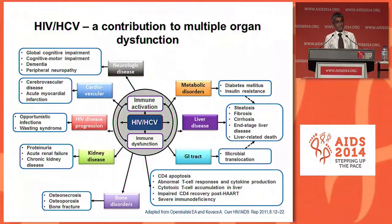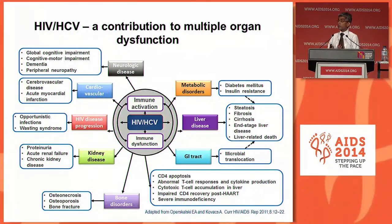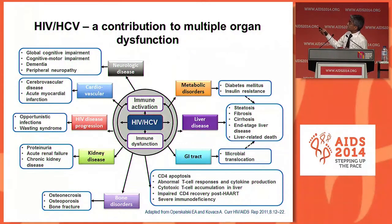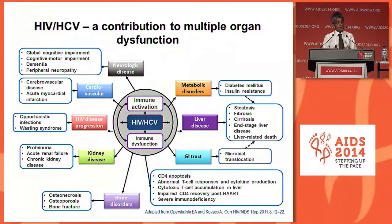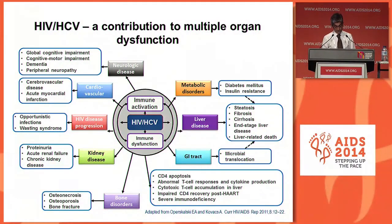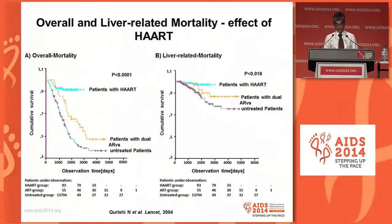Unfortunately, this is not just a liver disease in terms of the co-infection. When you have two chronic viral infections together, not only do you see liver disease effects, but you're also starting to see effects in terms of neurological disease, cardiovascular disease, HIV disease progression, and kidney and bone disorders as well. Having the two viruses together has multi-system effects rather than just liver-related effects.